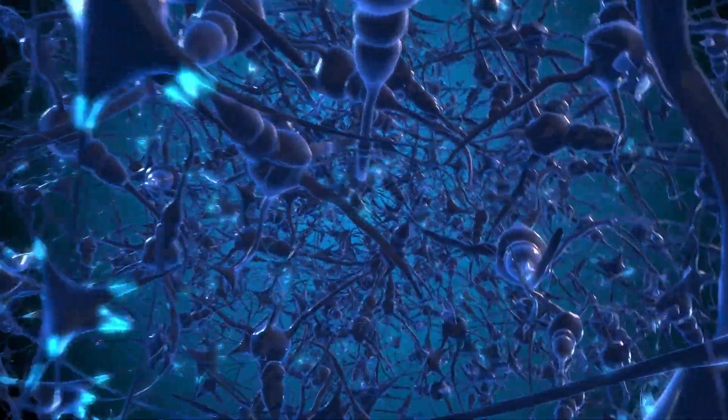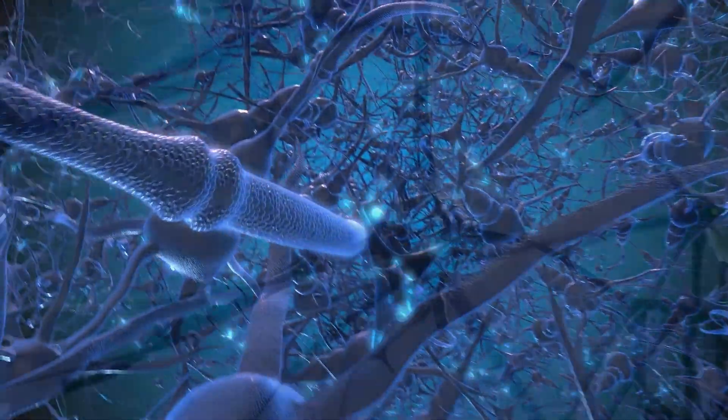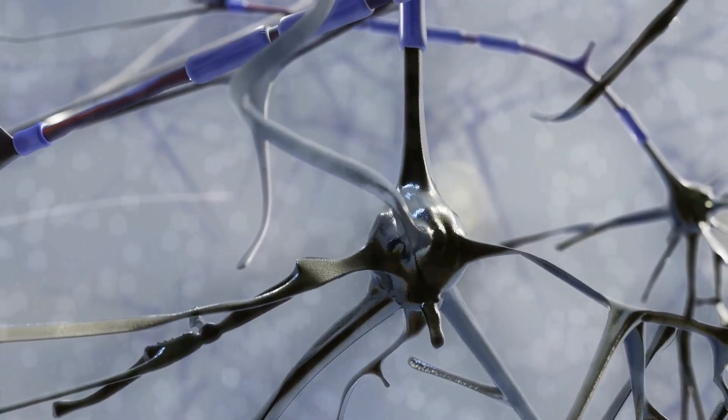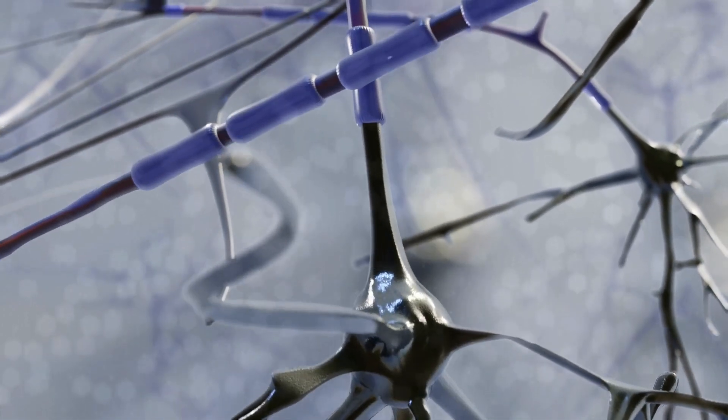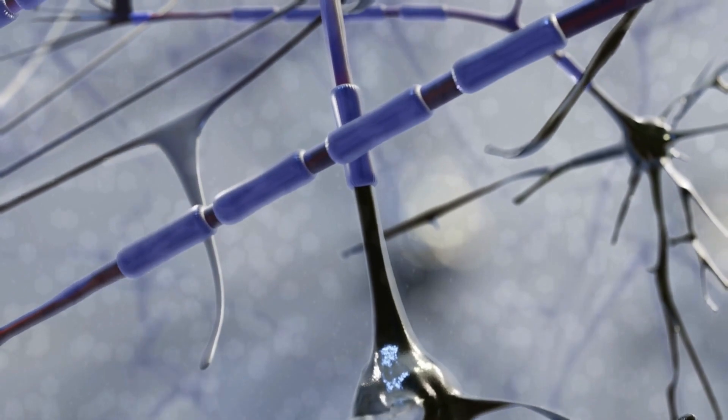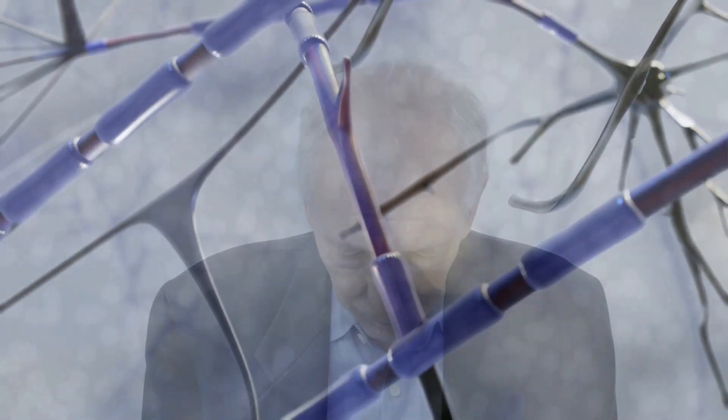Déjà vu occurs when there is a mismatch between the information being processed by the brain and the memories that are being retrieved. In other words, the brain is receiving new information that seems familiar, even though it has not been encountered before. This creates the feeling of having experienced the situation before, even though it is new and unfamiliar.